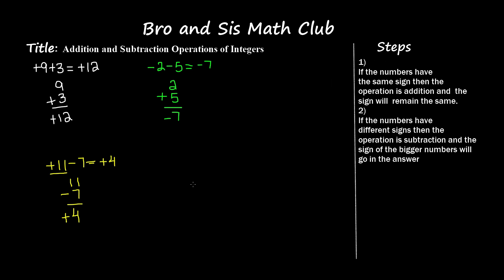Now let's do another example: negative 12 and positive 2. We still have different signs — a negative and a positive — so the operation is still subtraction. I'll write 12 and 2 and subtract: 12 minus 2 is 10. The sign of the bigger number goes in the answer; the bigger number is 12 and it has a negative sign, so negative 12 and positive 2 is equal to negative 10.